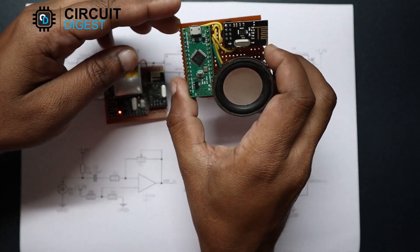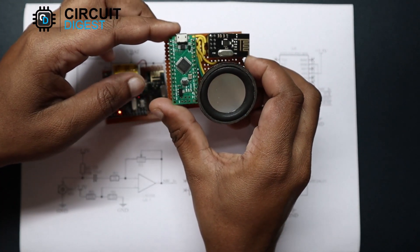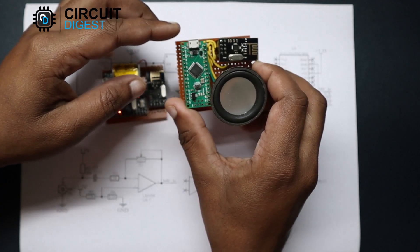And here is the receiver circuit which consists of the Arduino along with the NRF module and a small speaker for sound output.